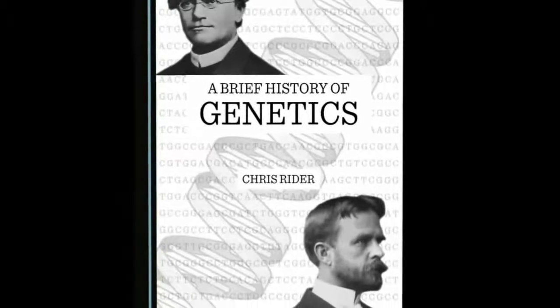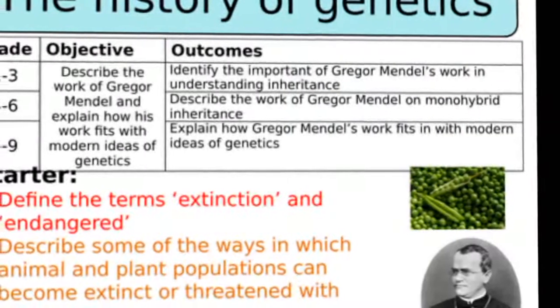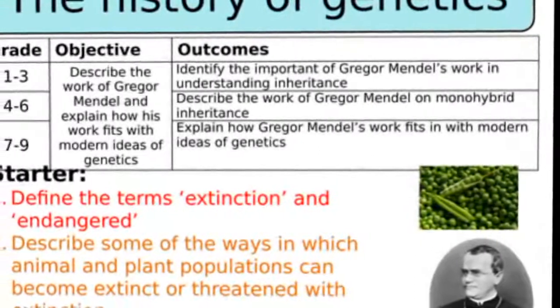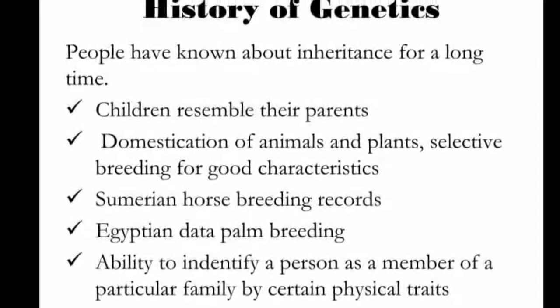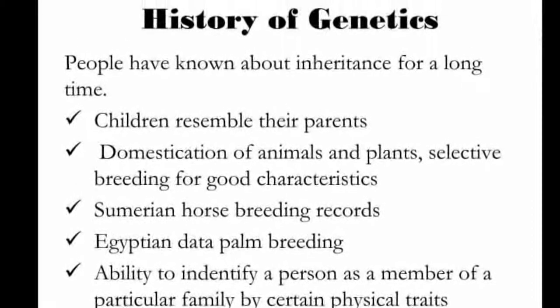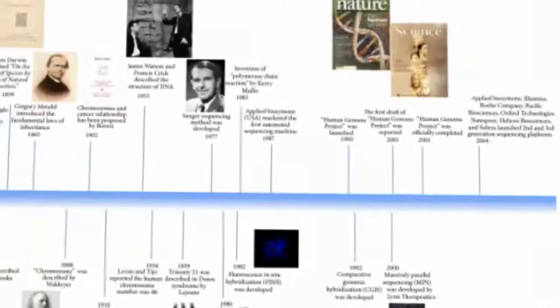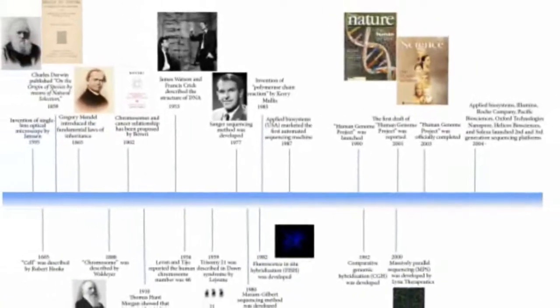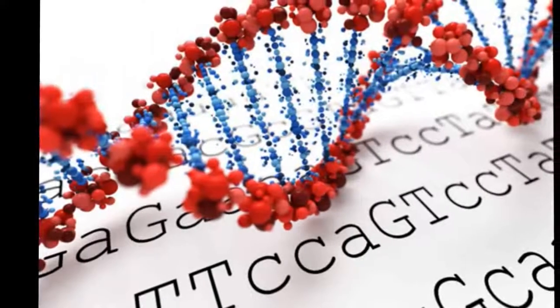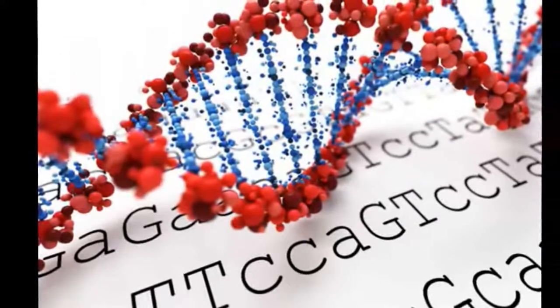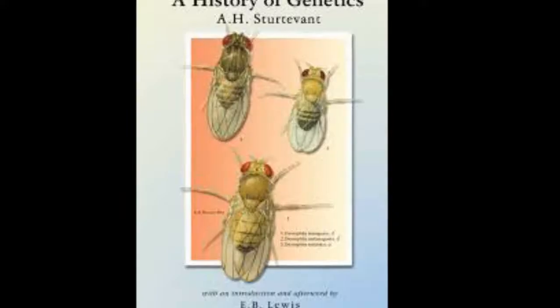After the rediscovery of Mendel's work, there was a feud between William Bateson and Pearson over the hereditary mechanism, resolved by Ronald Fisher in his work 'The Correlation Between Relatives on the Supposition of Mendelian Inheritance.' In 1910, Thomas Hunt Morgan showed that genes reside on specific chromosomes and later that genes occupy specific locations on the chromosome. With this knowledge, Alfred Sturtevant, a member of Morgan's famous fly room, using Drosophila melanogaster, provided the first chromosomal map of any biological organism.